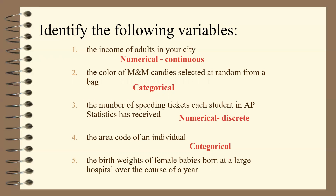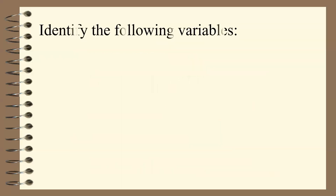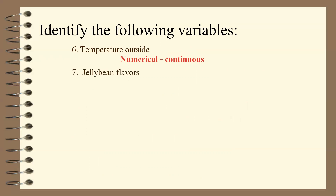The birth weights of female babies born at a large hospital over the course of a year — weight is a number, so it is numerical, and it is continuous because it could be any possible decimal. Anything you can measure is most often numerical continuous. Temperature outside? Numerical continuous — anything you measure. Jelly bean flavor? That is categorical. Shoe length — you measure the shoe, so that would be numerical continuous.